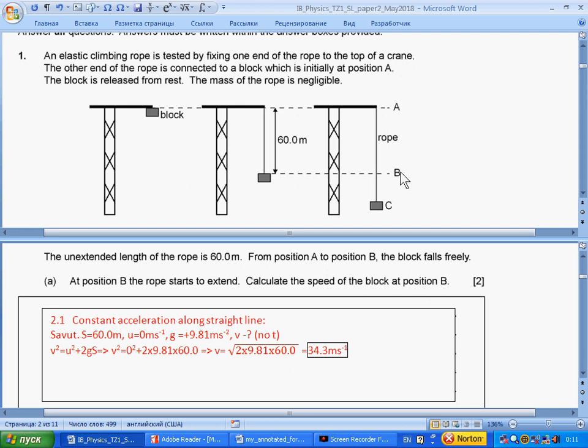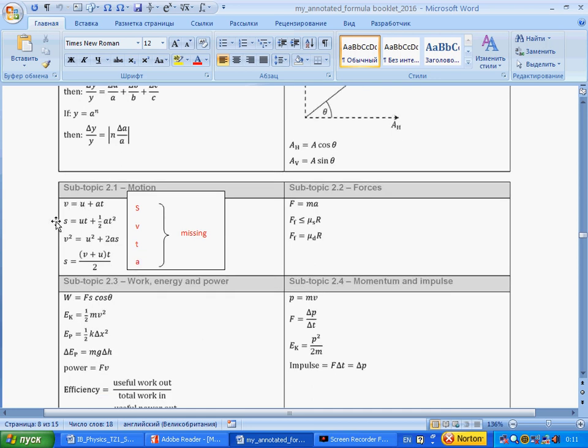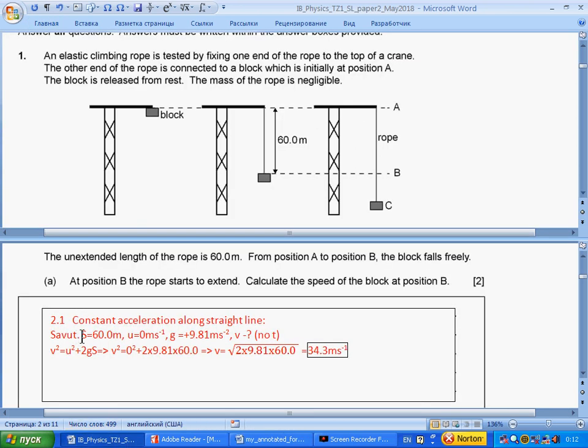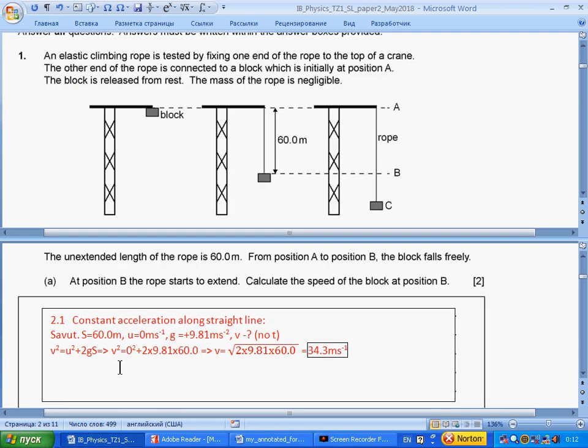From A to B, we have constant acceleration at g. For constant acceleration, we should look to section 2-1 in the reference data booklet. Here we have 1, 2, 3, 4 equations for constant acceleration or deceleration. In each equation, one of the quantities is missing. In our case, we have s, u is the initial velocity, g, and v should be found. No t. So, no t is this equation: v² = u² + 2as. We choose this equation, substitute values, find square root, and give answer to three significant figures.